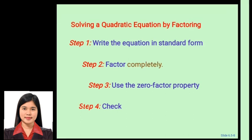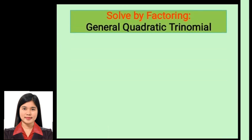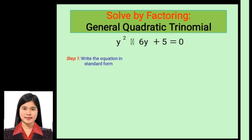For better understanding, let's have an example: solving by factoring a general quadratic trinomial. We have y² minus 6y plus 5 equals 0. Step 1 is to write the equation in standard form. The equation is already in standard form: y² minus 6y plus 5 equals 0.